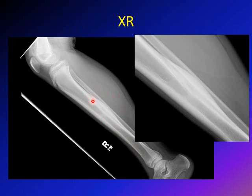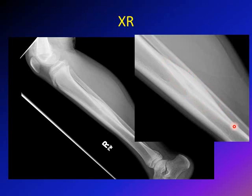In the lateral view, the anterior cortex is normal, but the posterior cortex suddenly becomes very dense in this area. In the close-up view, you can see the nidus — the radiolucent area — surrounded by all this reactive zone. So in the AP view we saw the reactive zone, and in the lateral view with a close-up we are able to see the radiolucent area of the nidus, as well as the reactive sclerotic bone around it.